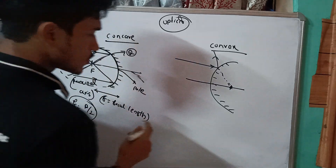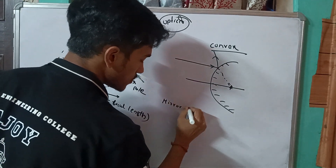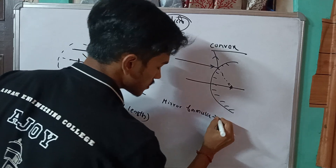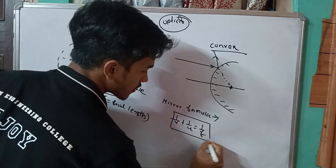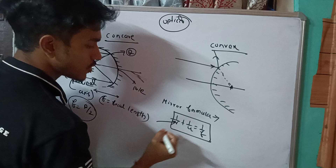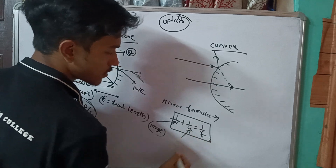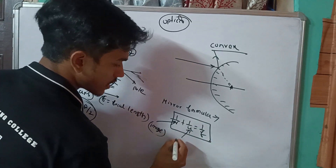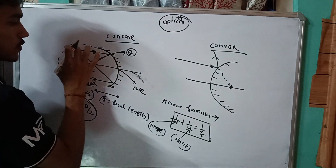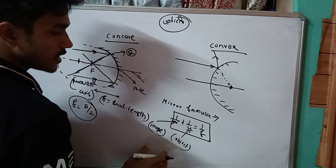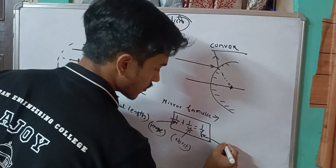This is the mirror formula: 1 by V plus 1 by U is equal to 1 by F. Here, V is called image distance, U is called object distance, and F is called focal length. This is called the mirror formula.